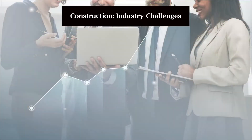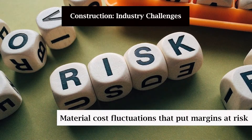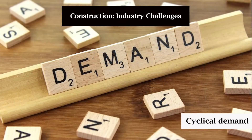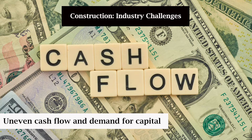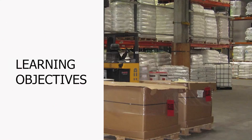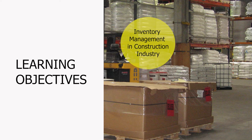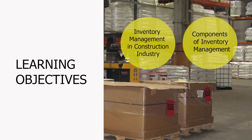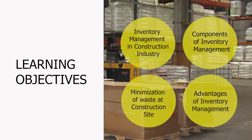In Unit 1, we have slightly touched on how inventory is managed in the construction industry. Now in this particular session, we will try to provide a glimpse of various procedures adopted in construction industry for managing inventory. Construction companies have a complex value chain and network. There is material cost fluctuation that puts margins at risk, order management issues, cyclical demand, uneven cash flow, and a complex regulatory environment. Our learning objective is to discuss the role of inventory management, its components, advantages, and how to minimize waste in the construction industry.